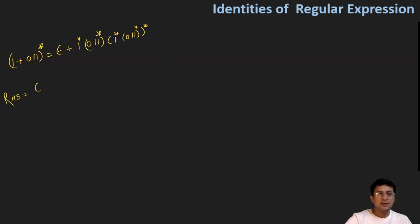The right-hand side contains epsilon plus one star, then zero one one and its closure. Then after this, one star and zero one one's closure, followed by the closure of everything.